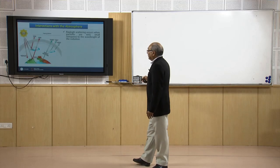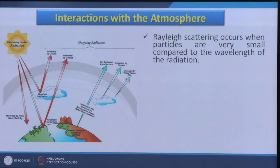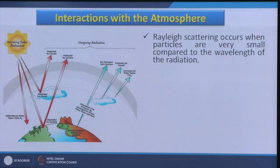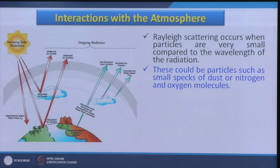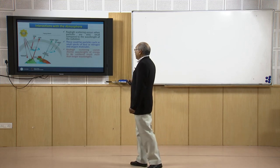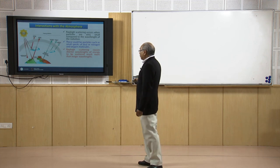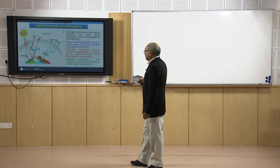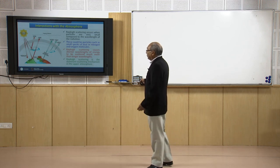The first type is Rayleigh scattering, which occurs when particles are very small compared to the wavelength of the radiation. This can be observed for outgoing radiation reaching the satellite, especially at very small wavelengths. Particles such as small packs of dust, nitrogen and oxygen molecules mainly cause Rayleigh scattering. Rayleigh scattering causes shorter wavelengths of energy to be scattered much more than longer wavelengths, and it is the dominant scattering mechanism in the upper atmosphere where smaller particles are present.